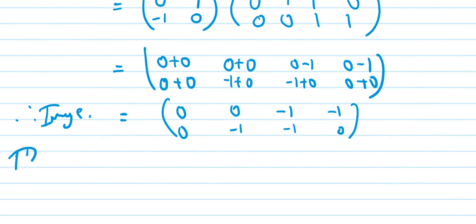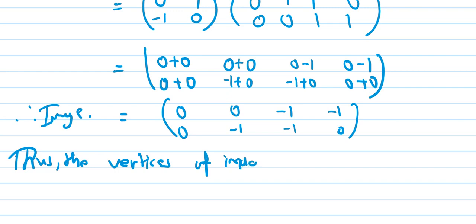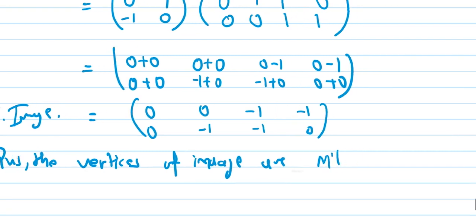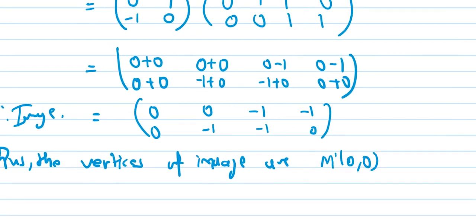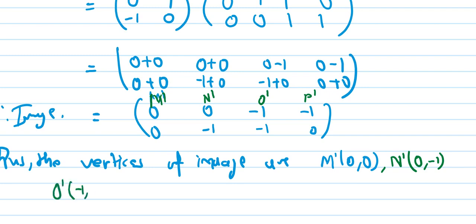Thus the vertices of the image are: M dash is (0, 0), N dash is (0, -1), O dash is (-1, -1), and P dash is (-1, 0).